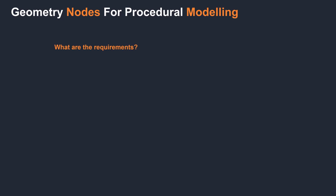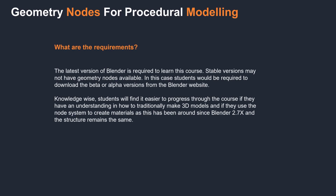What are the requirements for this course? The latest version of Blender is required. Stable versions may not have geometry nodes available, especially if you are using Blender version 2.91 or older. In this case, students would be required to download the Beta or Alpha versions from the Blender website. Knowledge-wise, students will find it easier to progress through the course if they have an understanding of how to traditionally make 3D models and if they use the node system to create materials, as this has been around since Blender 2.7X and the structure remains generally the same.